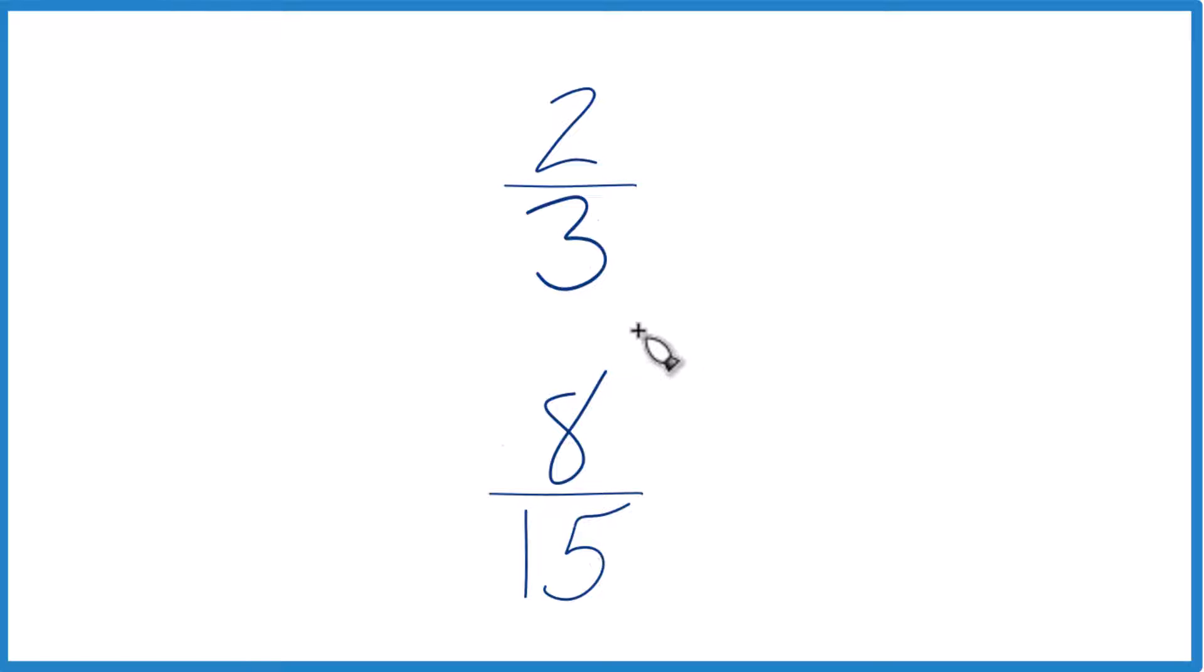Another way to do it is find a common denominator. Right now we have three and 15. But if we could find a number that both three and 15 go into evenly, we could get a common denominator. Just compare the numerators. We'd be done. So let's try that.